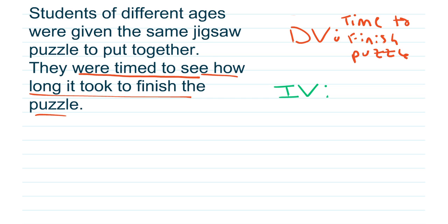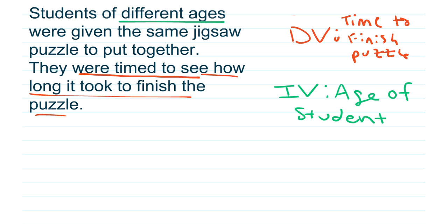Our independent variable, remember, is what the scientist or person is changing. It says explicitly in our situation that they were given the same jigsaw puzzle, so that's clearly not our independent variable. The only thing that was changed was the age of the student. So he's measuring the time it took to finish the puzzle, and what he changed was the age of the student trying to solve the puzzle.